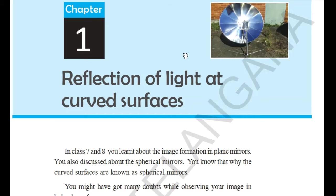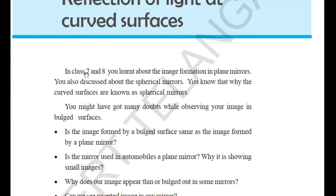So the first chapter of 10th class: in 7th and 8th class you learnt about the image formed in the plane mirror, which we have just revised. You also discussed spherical mirrors — they are of two types, concave and convex. Curved surfaces are known as spherical mirrors because they are a big part of a sphere — take a sphere shape, cut it, and that is the spherical mirror.